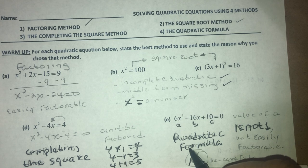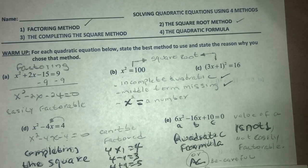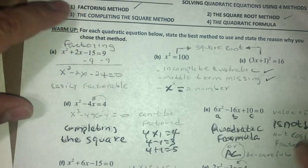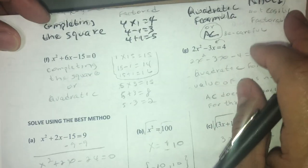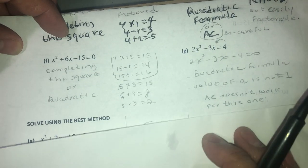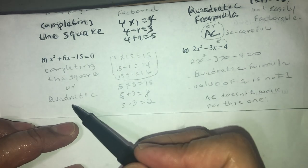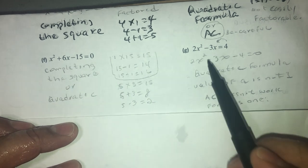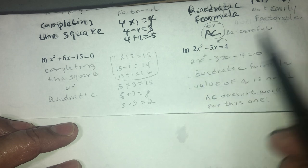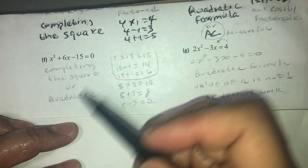On the homework you're going to do the same thing — pick the method you think is better. For the next two problems, you can use completing the square or quadratic formula. The quadratic formula is better when the value of a is not 1. Here the value of a is 2, so I'm better off using quadratic formula, but you can use either one. You can also try factoring — but the factors of 15 are 1×15 and 3×5, and neither combination gives you 6 in the middle, so this problem cannot be factored.